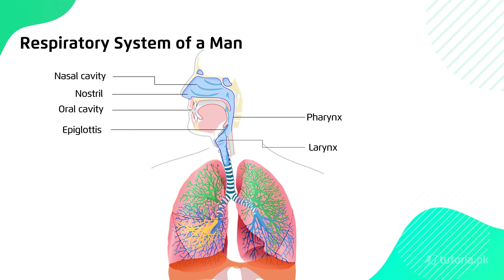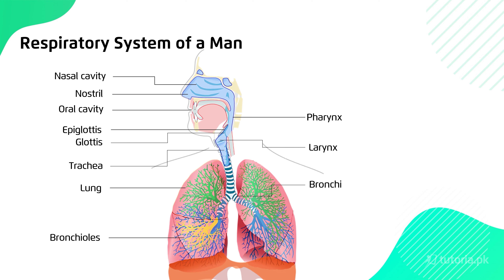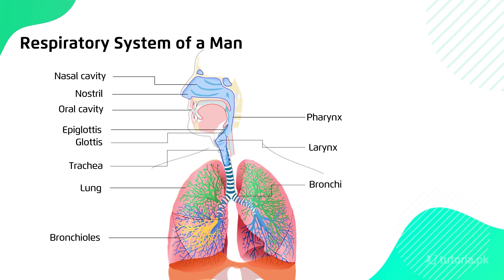In the larynx there is an opening that we call the glottis. The glottis is closed by the epiglottis — you can see a structure in the neck that closes it. From here we go to the trachea, which in common language we call the windpipe. The trachea is divided into two divisions called bronchi. When they go into the lungs, they create smaller structures called bronchioles, and at the end of the bronchioles is the alveoli.